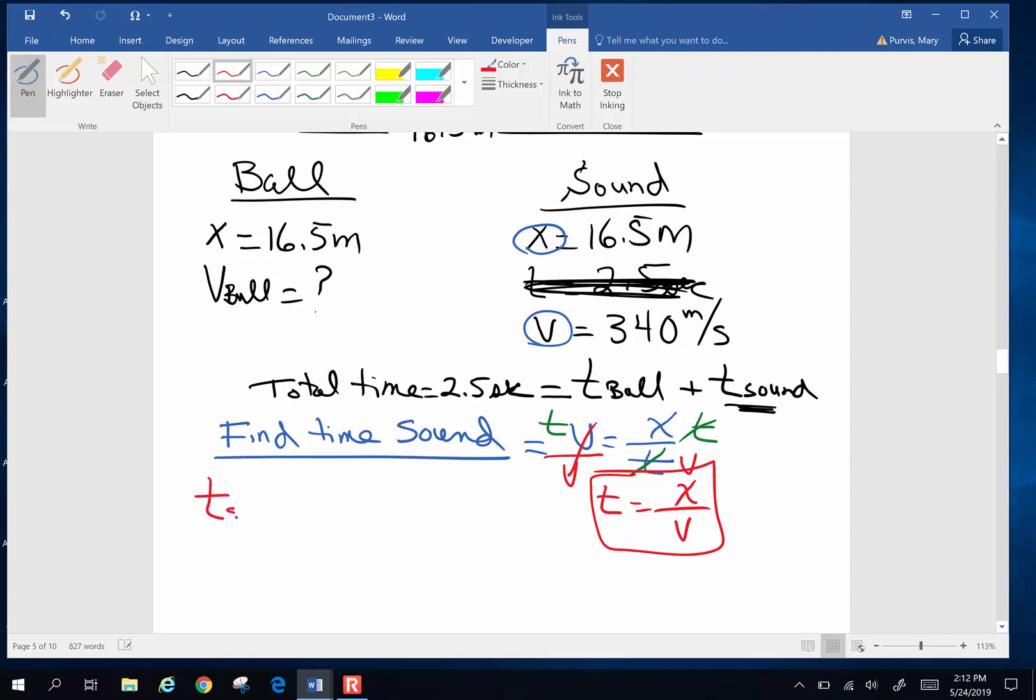So the time for the sound to travel is the distance the sound travels, which is 16.5 meters, and the velocity of the sound, 340 meters per second. Picking up my calculator, I've got 16.5 divided by 340 is going to be 0.04853. I've got 3 sig figs, so somewhere in there I should probably stop. What unit should it be?